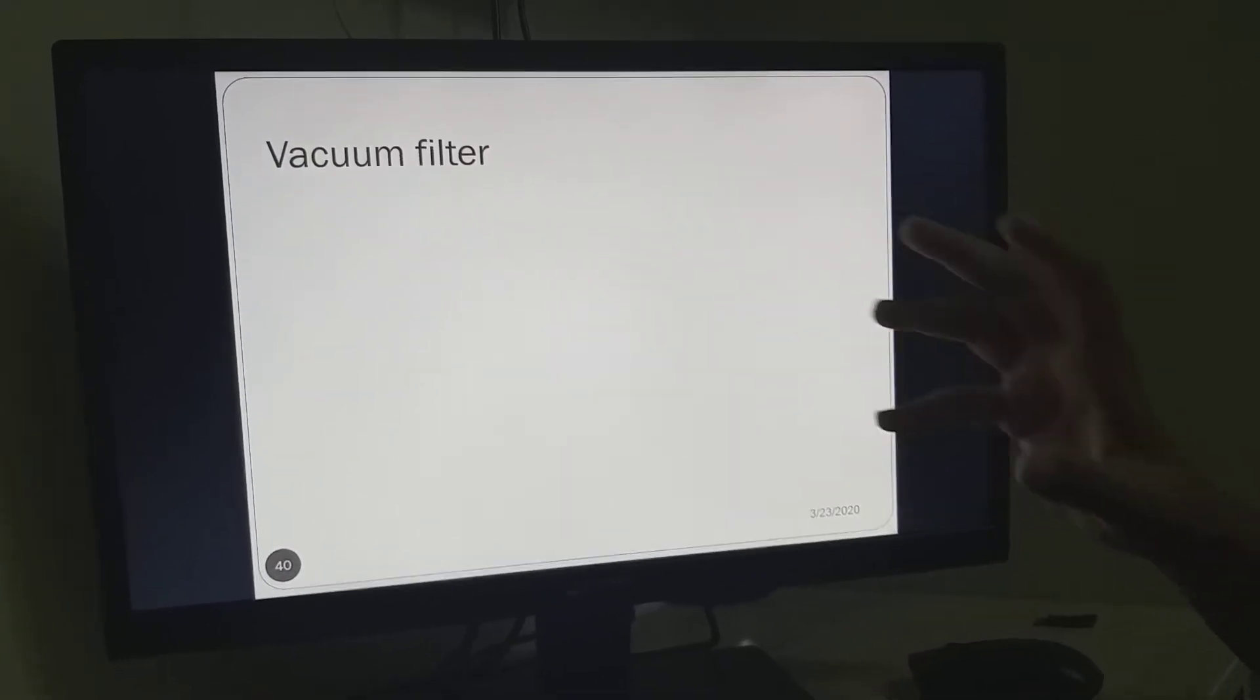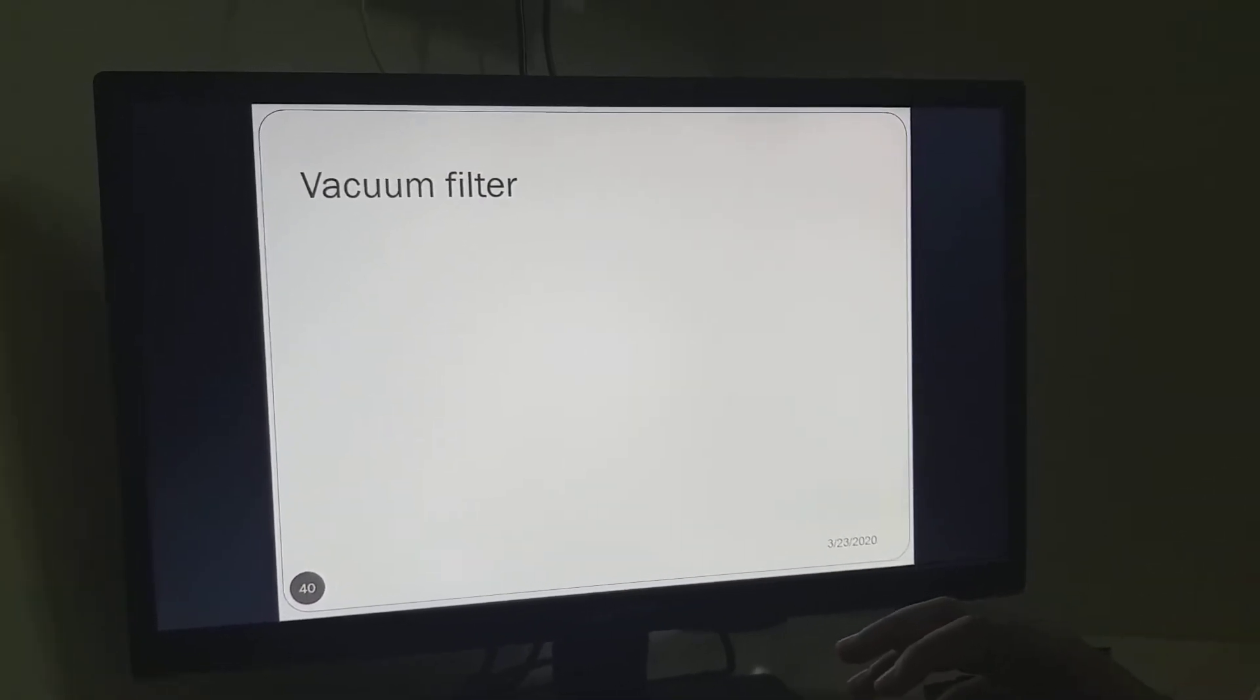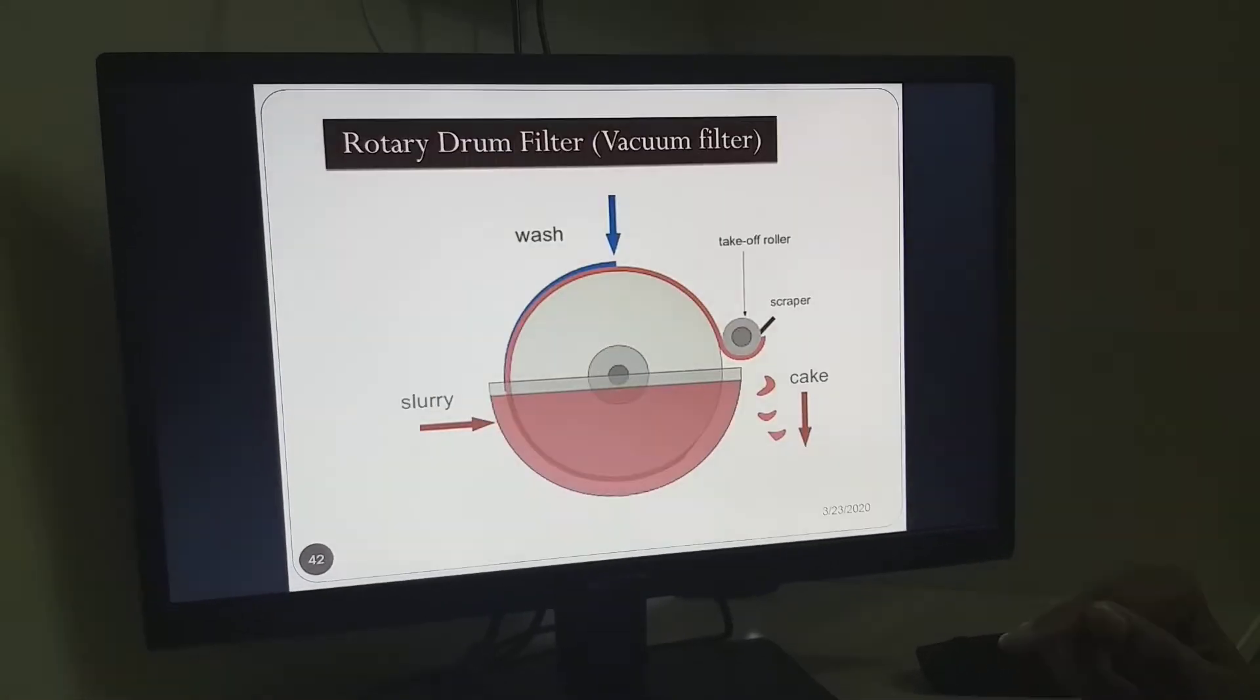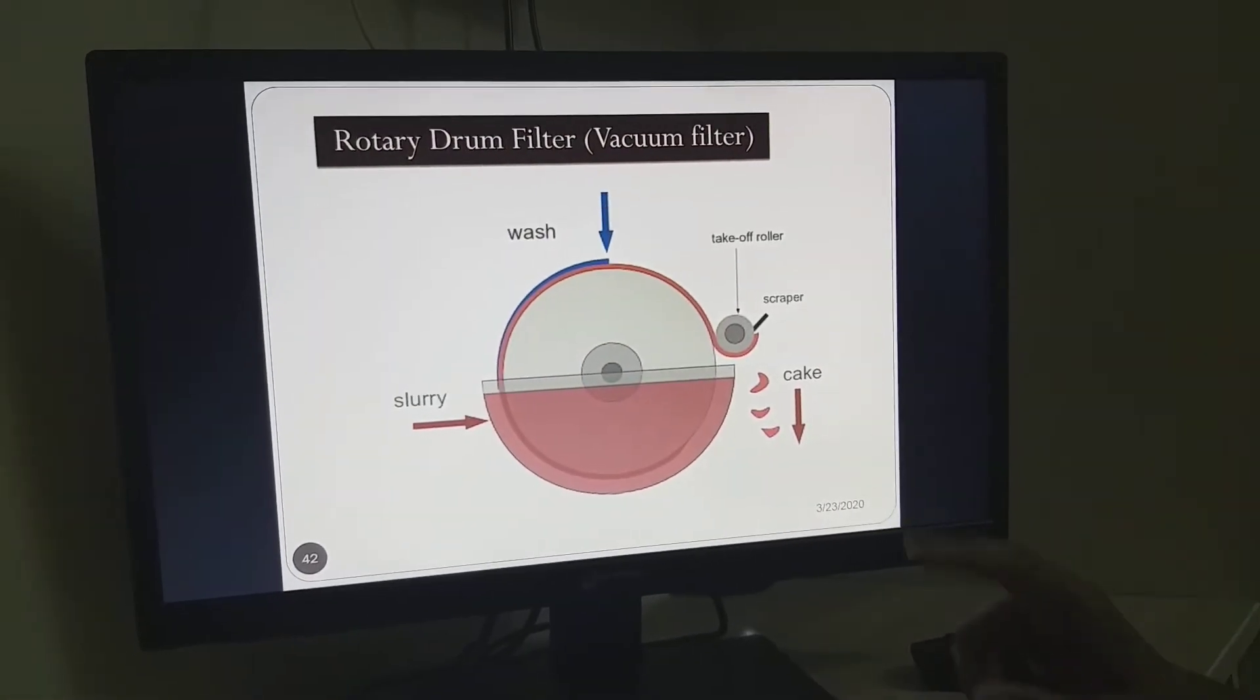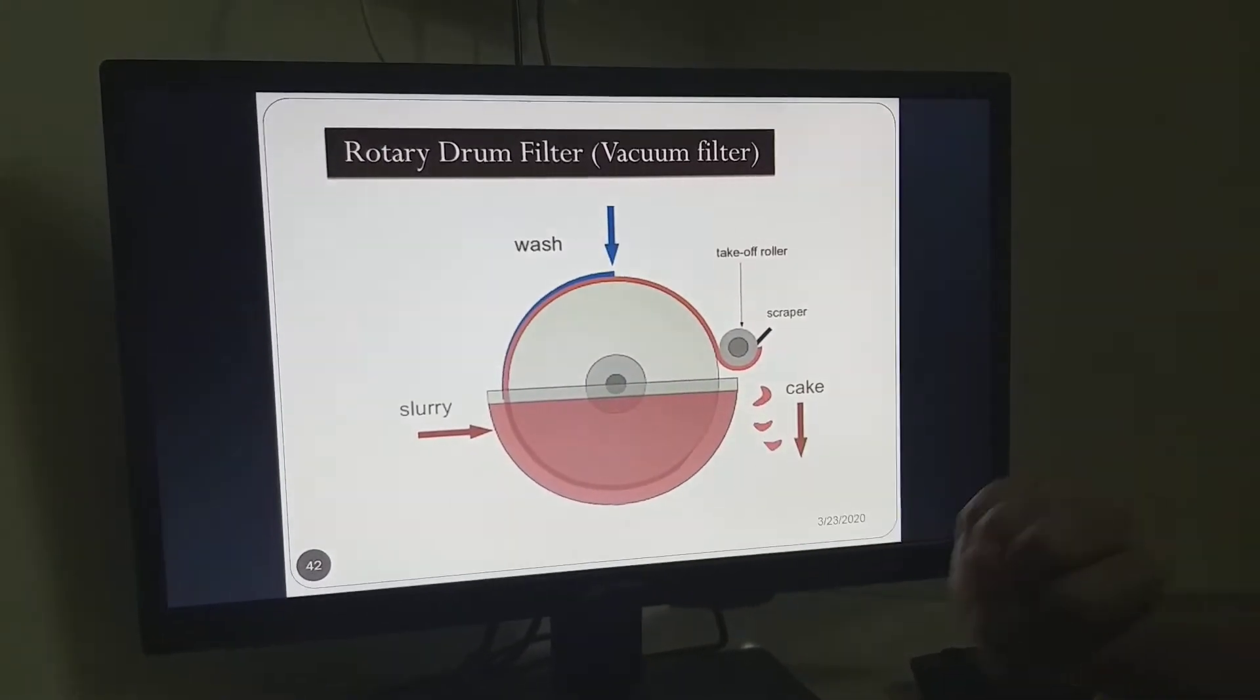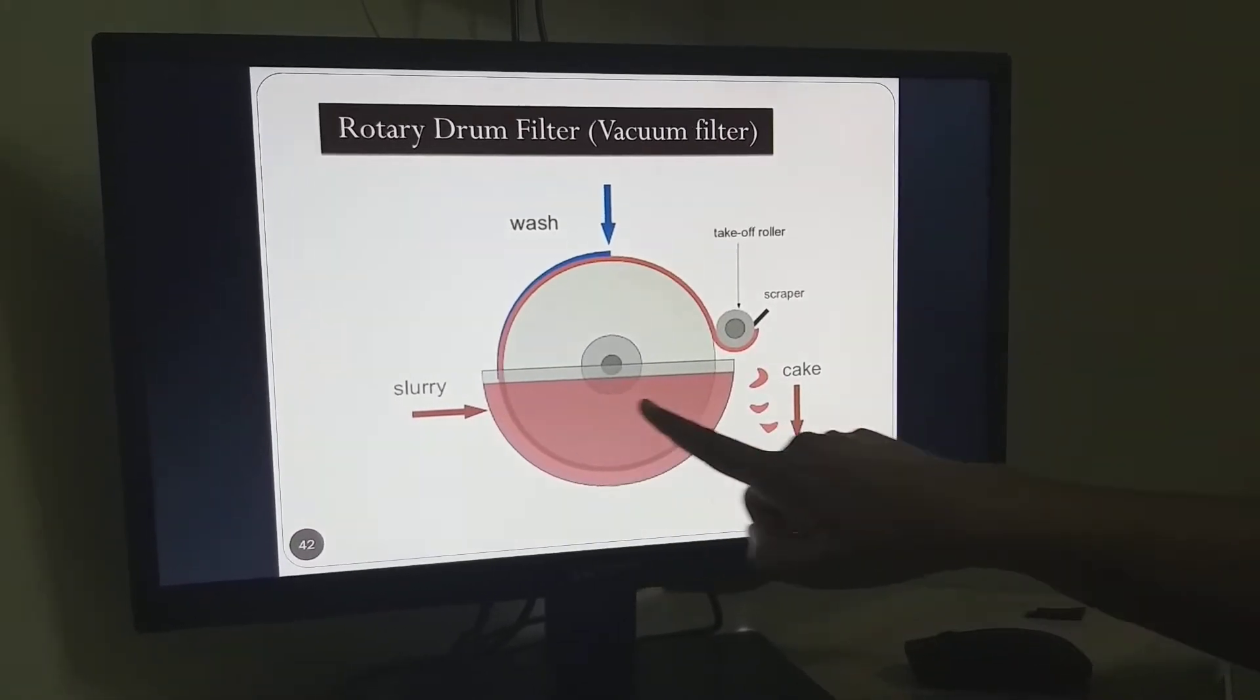Now vacuum filter. Vacuum is basically when we operate any type of machine, filter, or equipment under or below atmospheric pressure. Plate and frame is a pressure type filter, while rotary vacuum filter is a vacuum type filter. This is a simple diagram where you have the trough or bath where the slurry is placed.